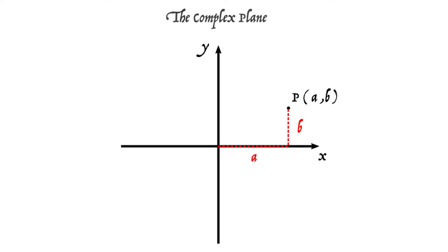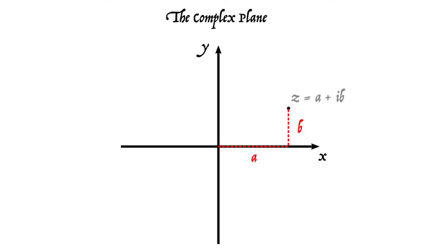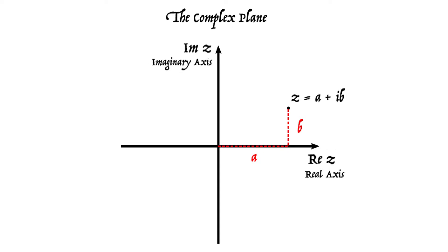So what difference does it make if we assume this is the complex plane? In that case the point P will represent the complex number a plus ib, and the x coordinate a now measures the real part of z, and the y coordinate b now measures the imaginary part. So our x and y axes become the real axis and the imaginary axis. That's the equivalence between the Cartesian plane and the complex plane, where each point represents a complex number.